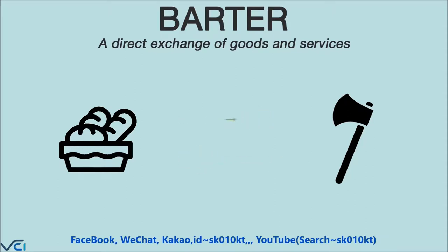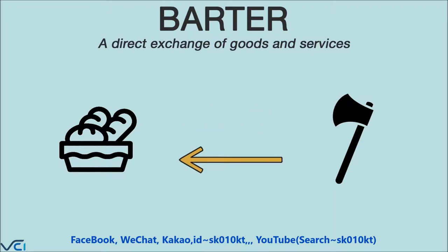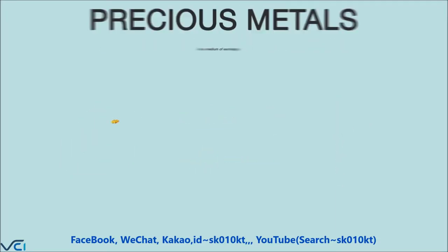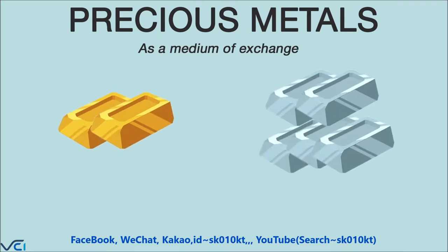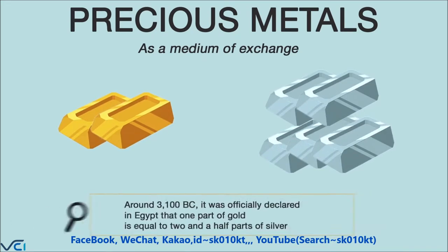Money has come a long way. Over 10,000 years ago people realized that in order to prosper they needed to engage and trade with others, so they started to exchange whatever they were good at making for something they couldn't make or otherwise get themselves.